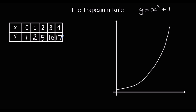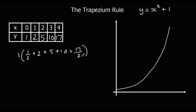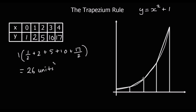To work out the area of these trapeziums, we don't have to work them out individually. The width is 1, so we half the first value, add the second, third, and fourth, and half the last one. Typing that into the calculator gives us 26 units squared — that's an approximation, not the exact area under the curve.